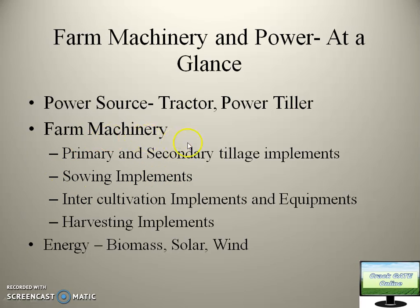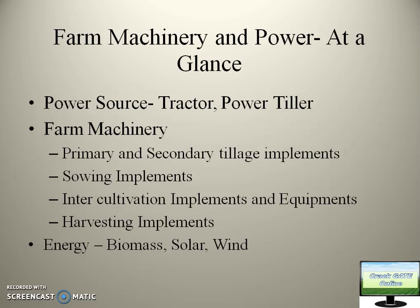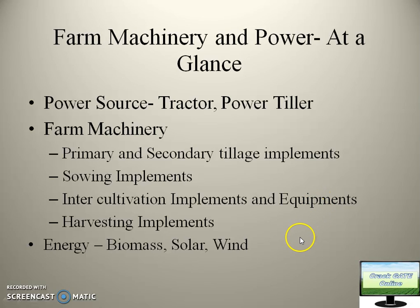Inside primary and secondary tillage there will be moldboard plough, cultivator, rotavator, and many more. The second stage is sowing implements for putting your seed into the soil — planters, transplanters, and other implements are involved here. Third, once the plant starts growing, many unwanted weeds will also grow. During this period you will need to supply fertilizer, so intercultural operations are very important.